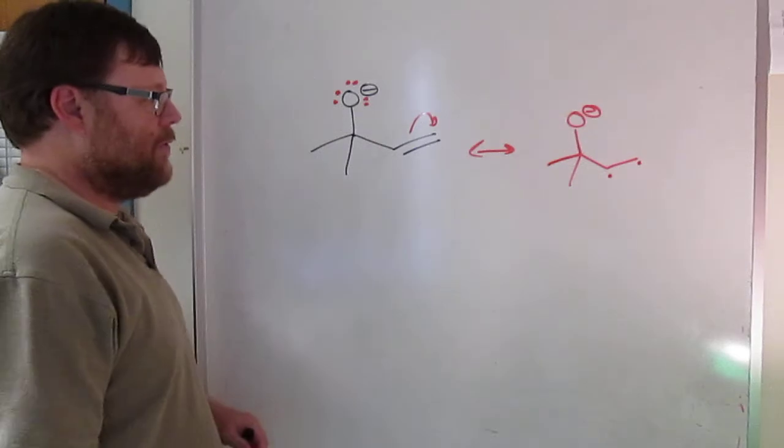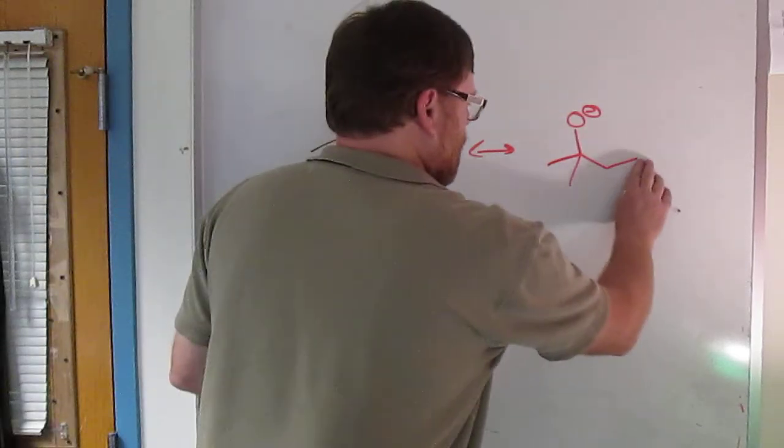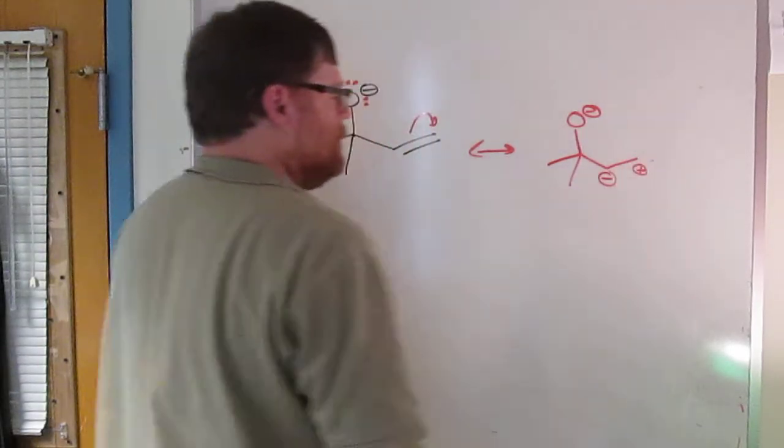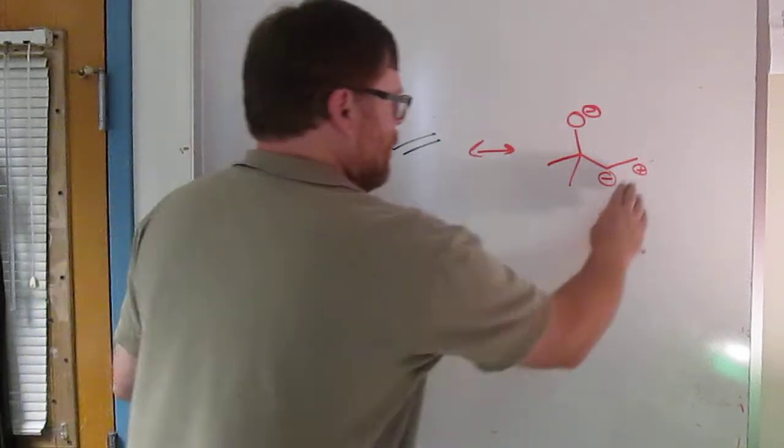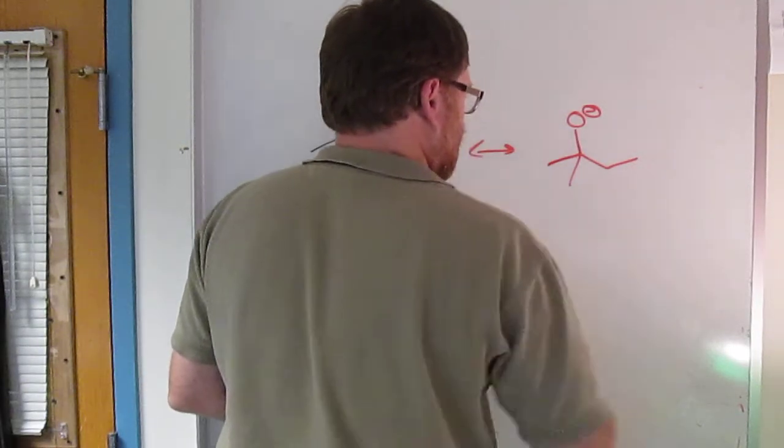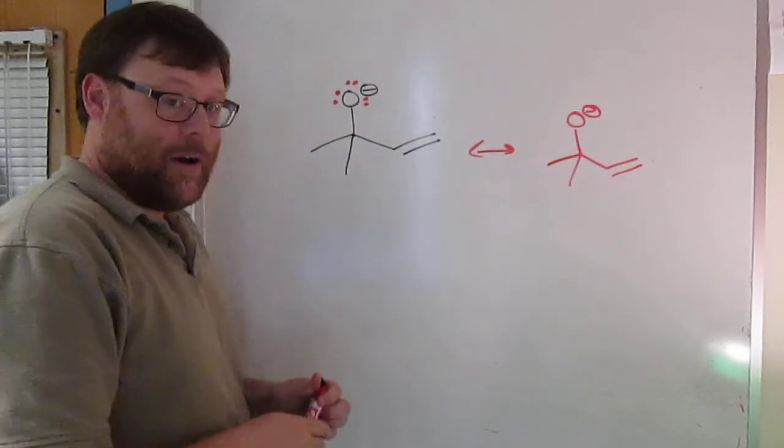Right, that would be a resonance form. You could move the charge the other direction. Get that from that arrow. So minus and plus on both of them. But in fact, those aren't very important.